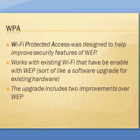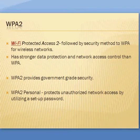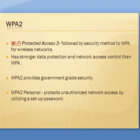WPA2, Wi-Fi Protected Access 2, is the follow-up security method to WPA for wireless networks. It has stronger data protection and network access control than WPA. WPA2 provides government-grade security, and WPA2 Personal protects against unauthorized network access by utilizing a setup password.